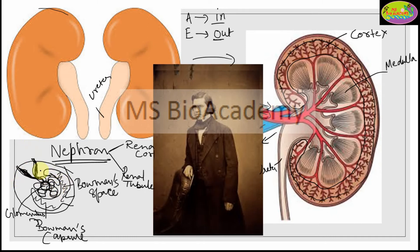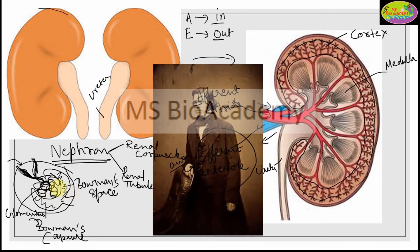From the glomerulus, blood is collected by the efferent arteriole. Impure blood enters, toxic components are filtered out, and pure blood comes out through the efferent arteriole. RBCs and essential proteins flow back into the rest of the body. The glomerulus and Bowman's capsule together form the renal corpuscle. Tubules come out from the Bowman's capsule, forming the renal tubule.